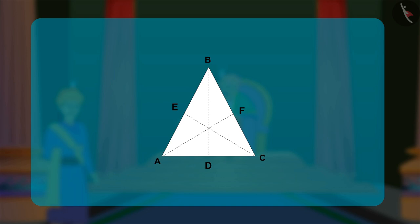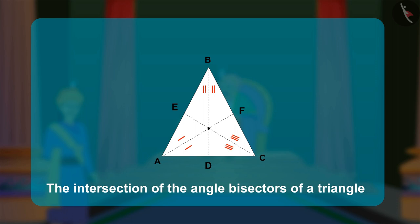he explained that the point of intersection of angle bisectors of the three angles of a triangle ABC is the incenter, denoted by I.